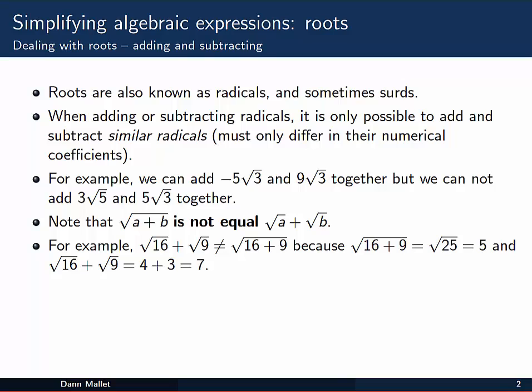When we add or subtract radicals, it's only possible to add and subtract similar radicals, those which differ only in their numerical coefficients. For example, we could add -5√3 and 9√3 together because they're just multiples of √3. But we can't add 3√5 and 5√3 together because the radical is different.